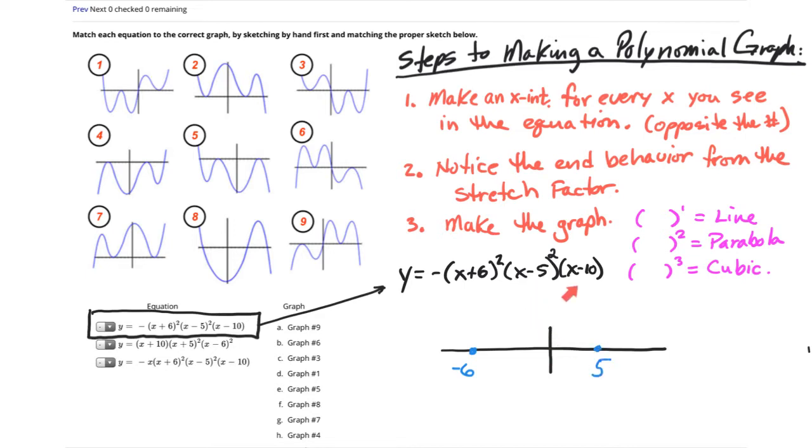And lastly, I need to have a number at positive 10, and now I've successfully made my three x-intercepts for every x that I saw. The next thing I need to do is consider what the end behavior is.